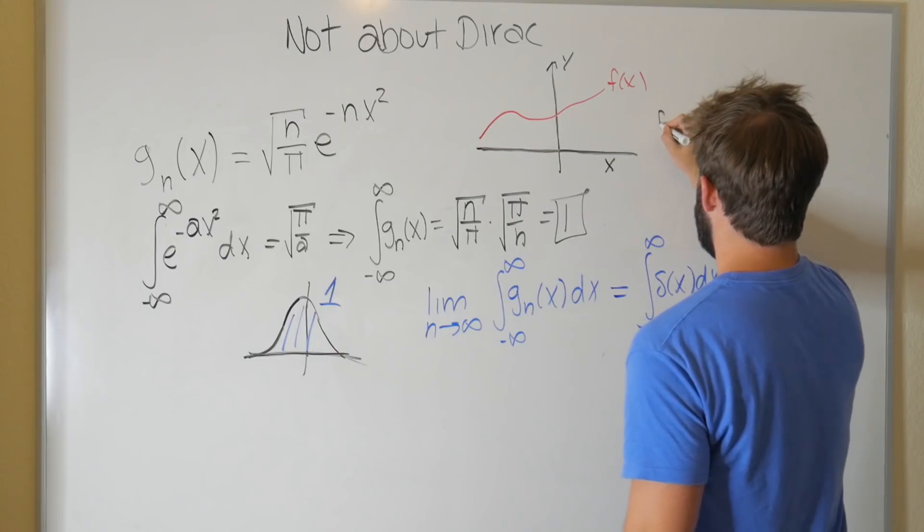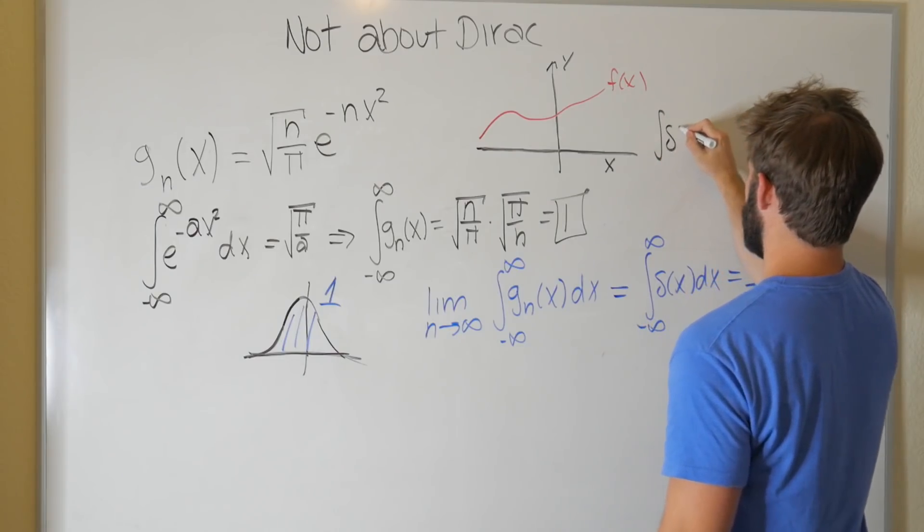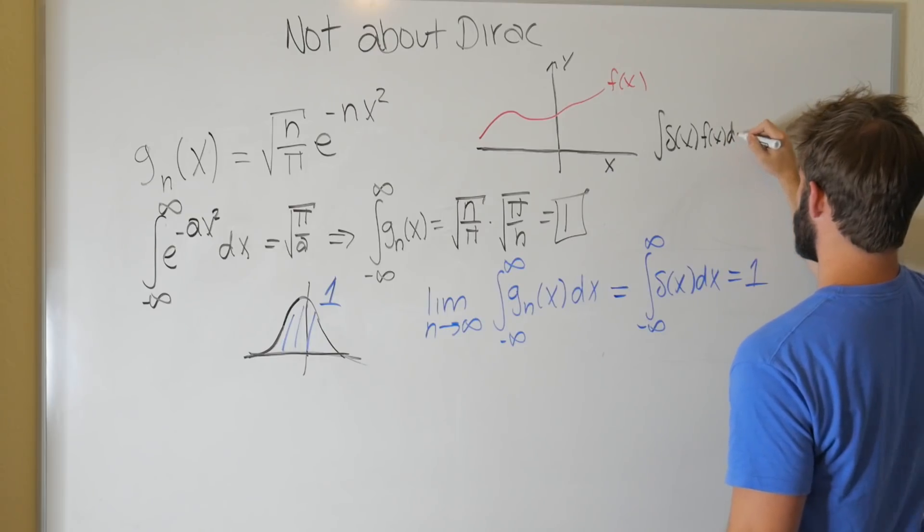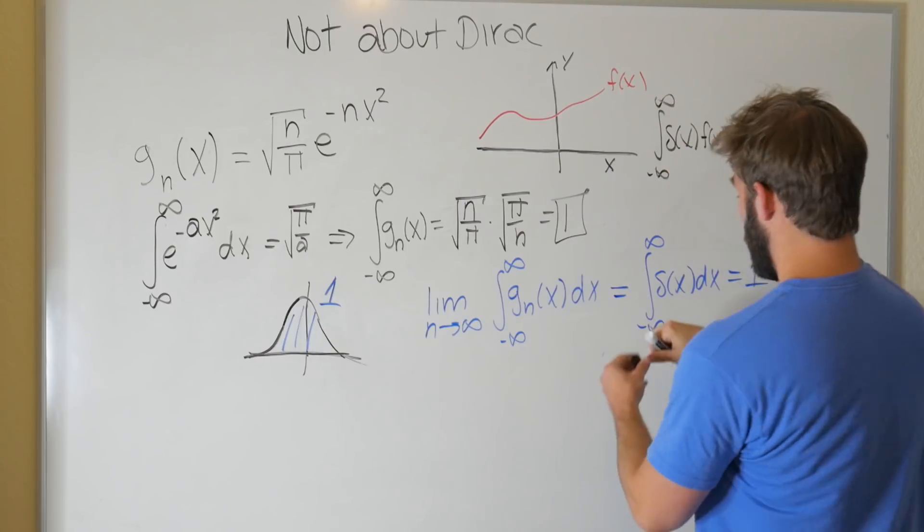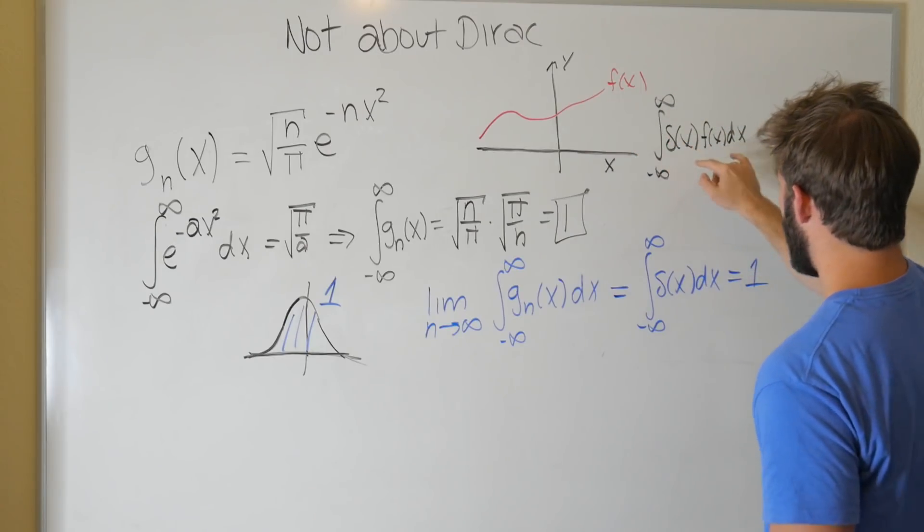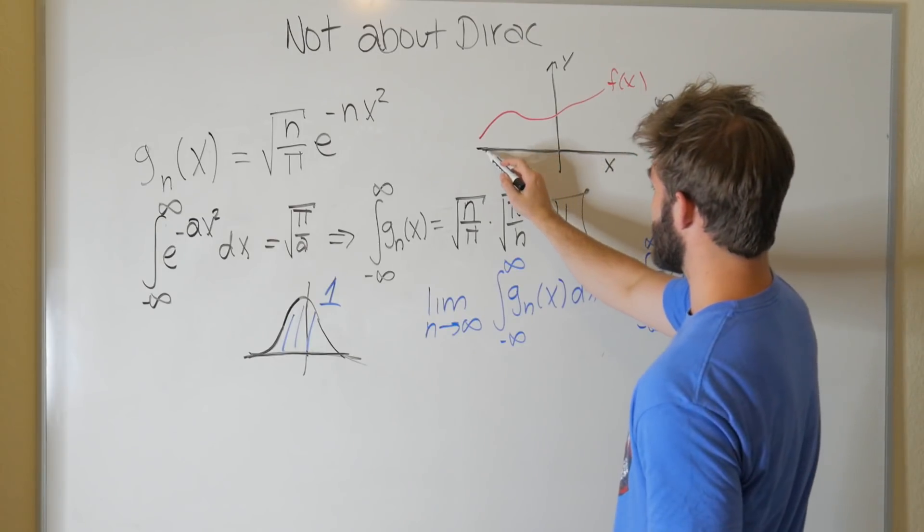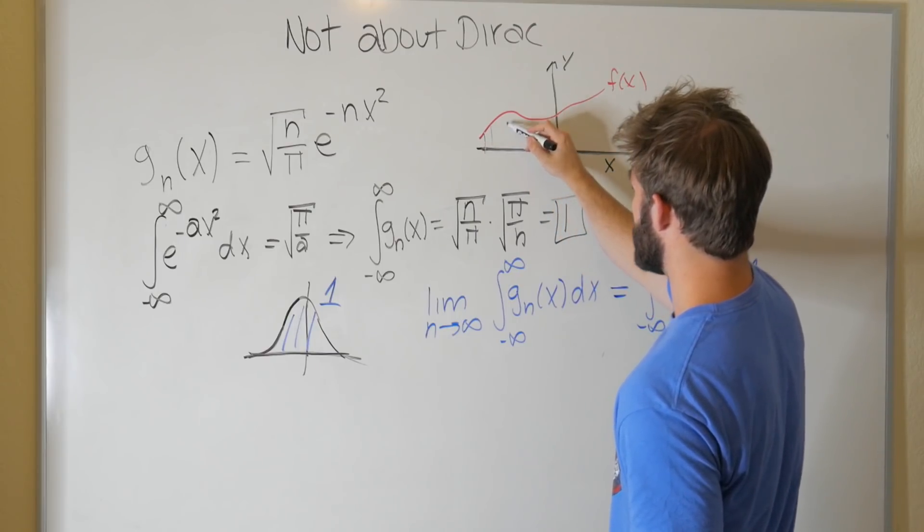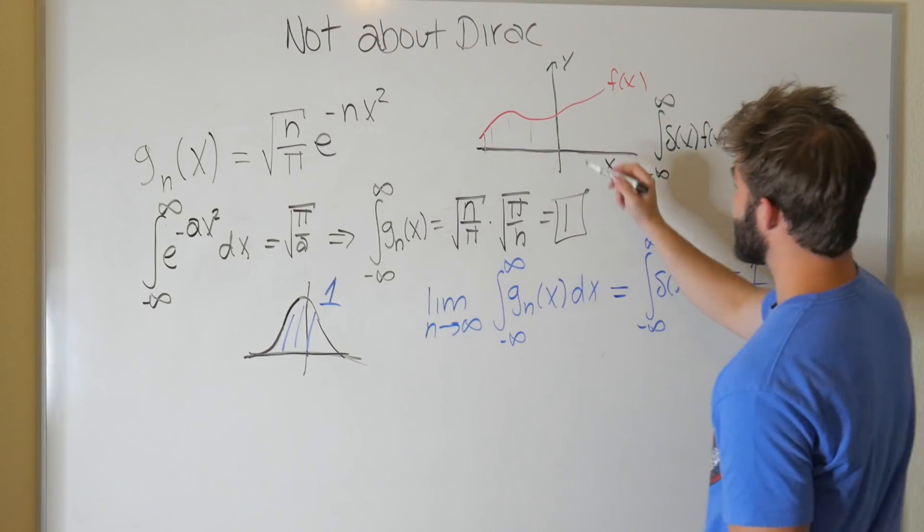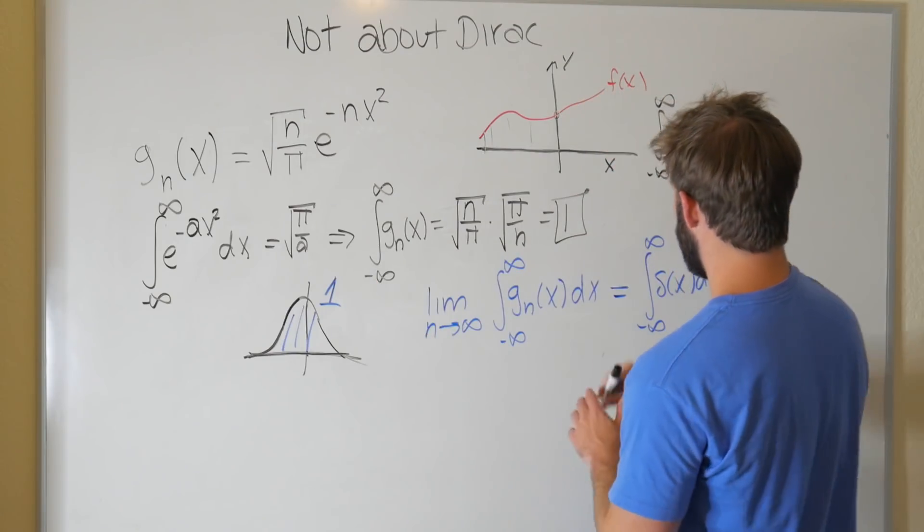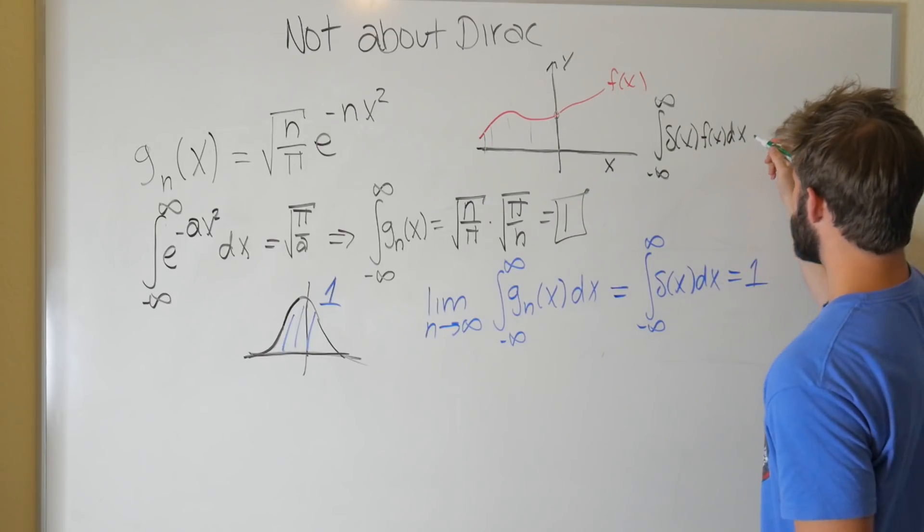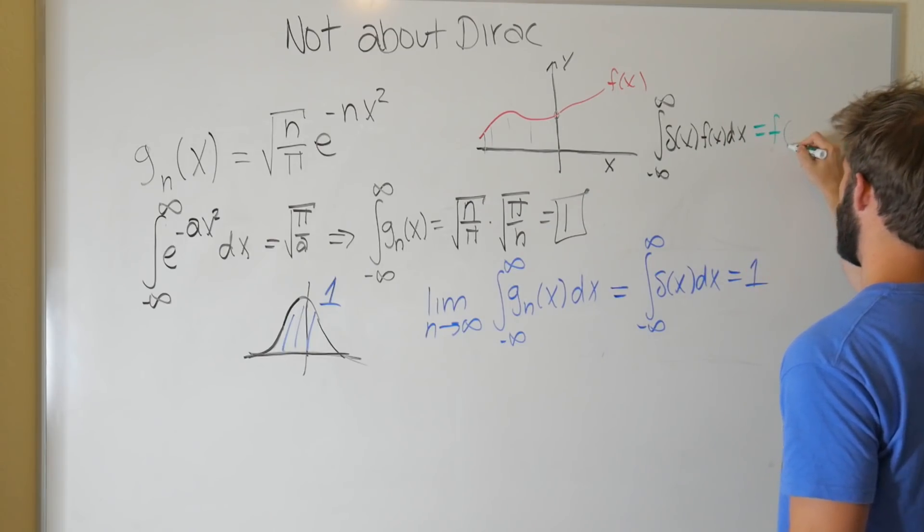well, the integral of delta of x, f of x, dx, from negative infinity to infinity, well, we're multiplying the delta function by our other function at all points x, but the delta function is zero everywhere, so here it's zero times this point, zero times this point, zero times this point, all the way down, until you get to this point here, which is why, when you integrate the delta function times a function, it picks out the point at zero.